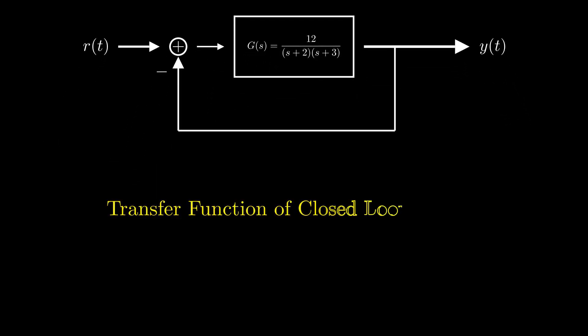The transfer function for the closed loop system can be written as G(s) over 1 plus G(s) and can be further simplified as follows.